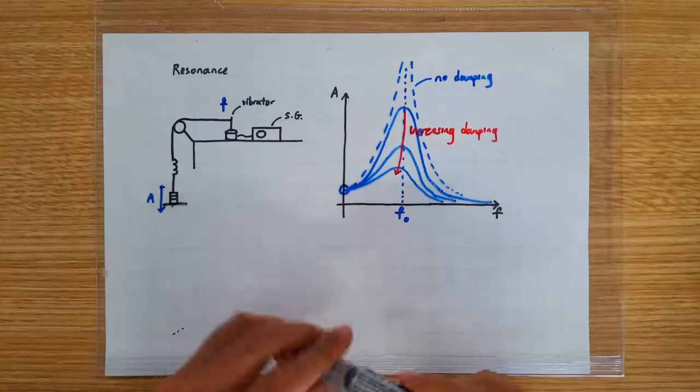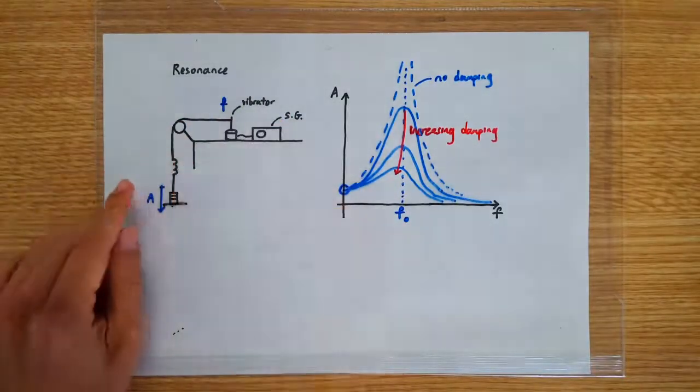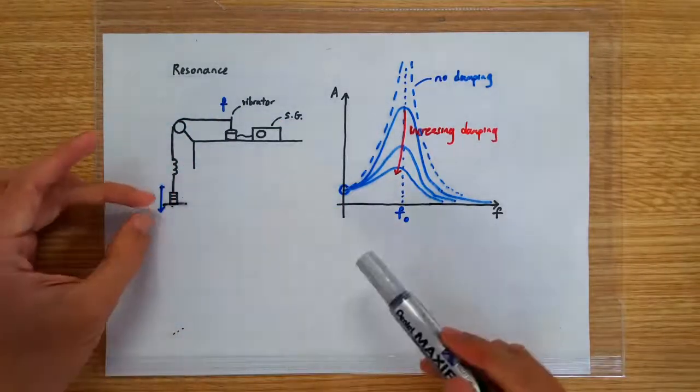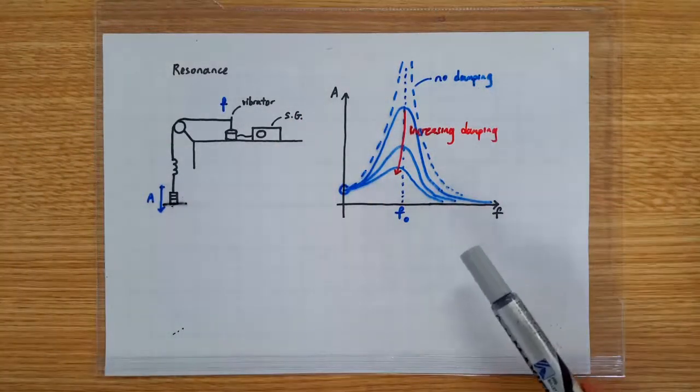With no damping, you are not losing energy to the surroundings and if you continuously feed energy into the system, then of course the amplitude can grow and grow forever and in theory it can reach an infinite amplitude.